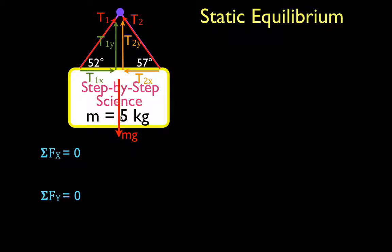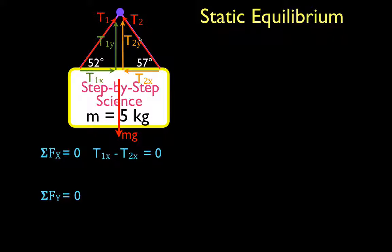In the x-direction, we have only two forces: T1x acting to the right in the positive direction, and T2x acting to the left in the negative direction. So we write T1x minus T2x equals zero — T1x and T2x are equal in magnitude but opposite in direction. For the y-direction, we have the y-component of T1 and the y-component of T2 in equilibrium with the weight of the object. Those two components are holding up the sign and supporting that weight mg, so: T1y plus T2y minus mg equals zero.